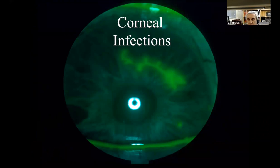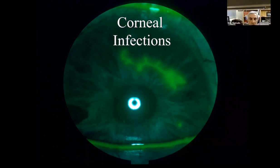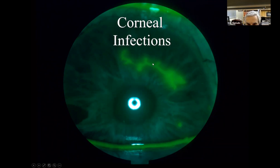Now we want to talk about corneal infection. Catherine, what do we see here? It's a slit lamp photograph with fluorescein and a dendritic lesion — it looks like HSV keratitis. You see the dendritic lesion with staining in the center where the epithelium is denuded and thick edges. If you're going to culture one of these, don't culture where the epithelium is gone — culture at the edges where the bulbous dendrites are. Classic for HSV herpes simplex.